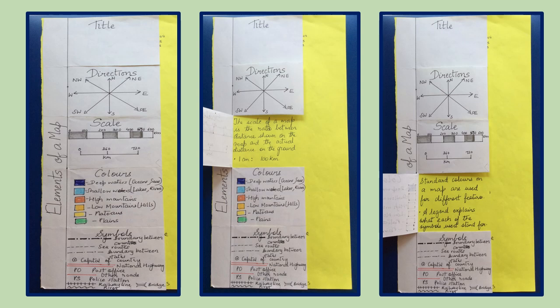The third element of a map is scale. The scale of a map is the ratio between distance shown on the map and the actual distance on the ground. For example, one centimeter is 200 kilometers.